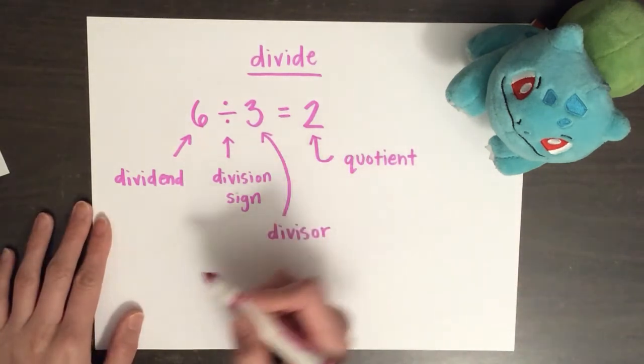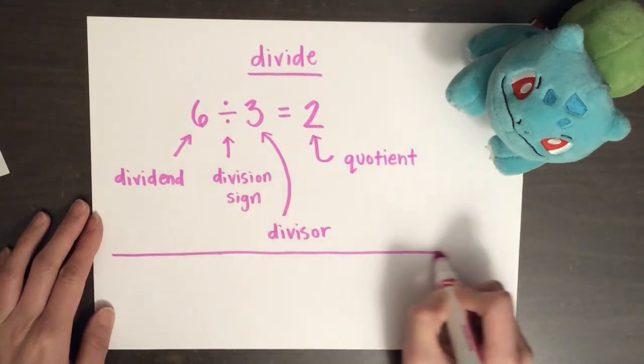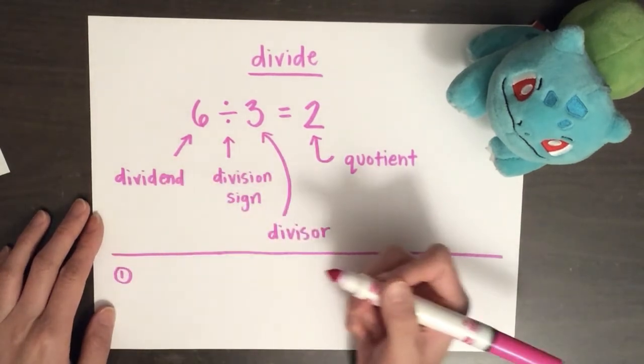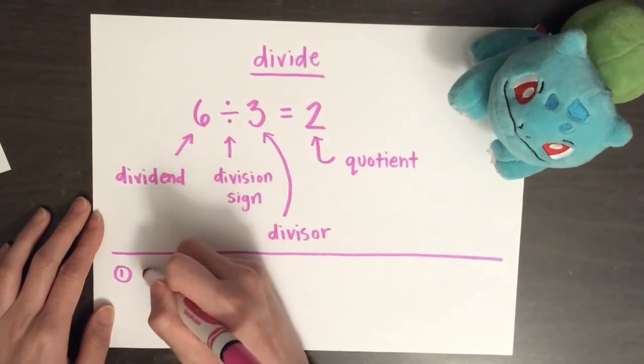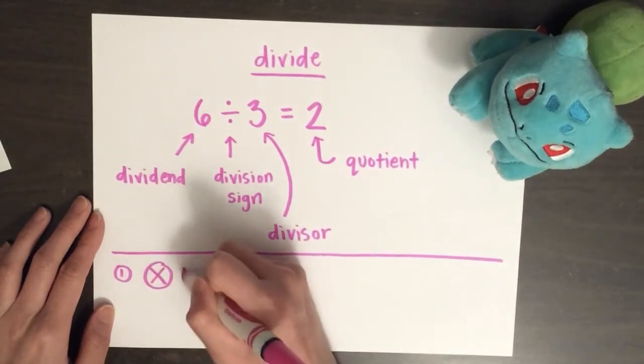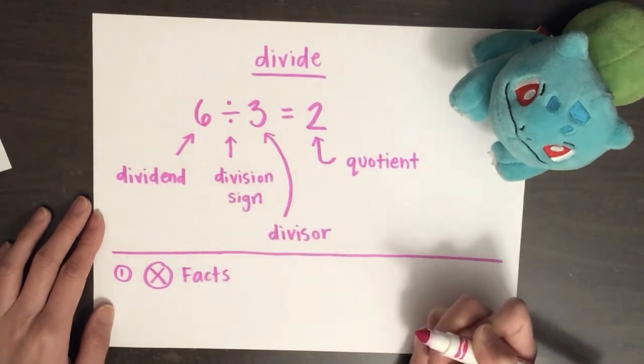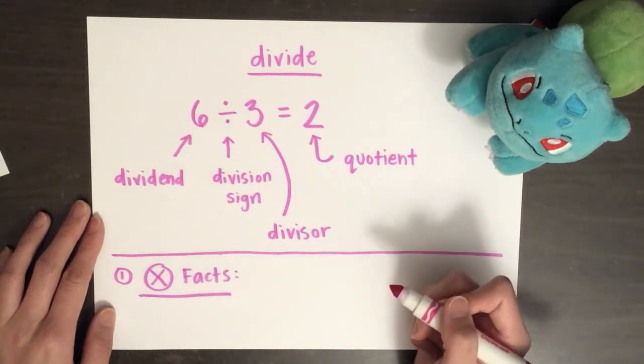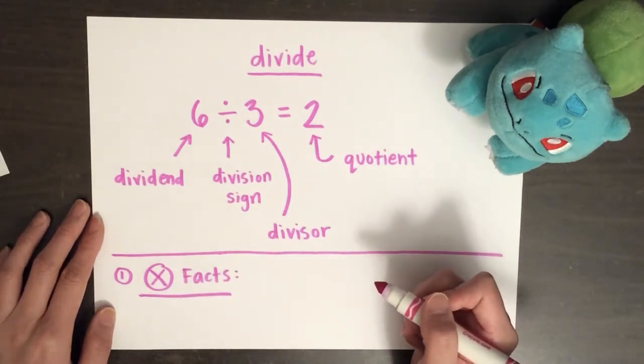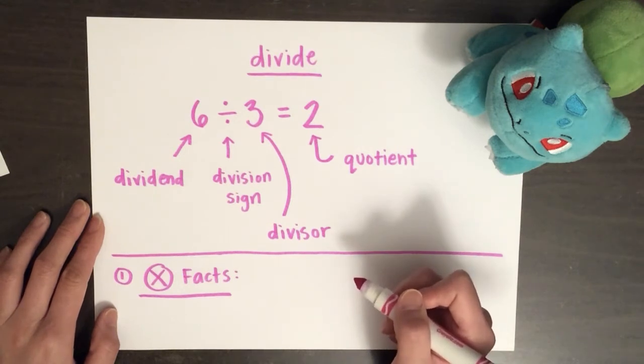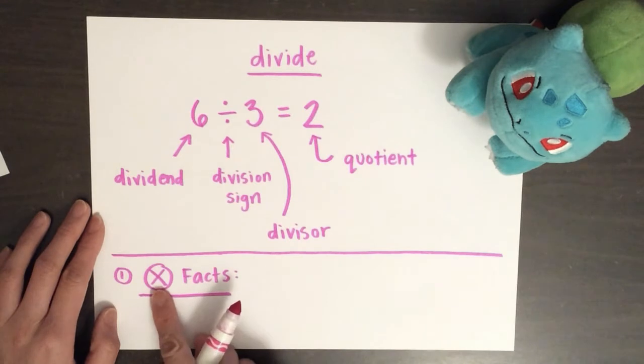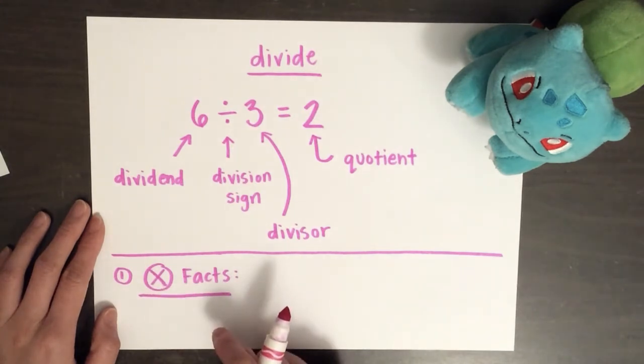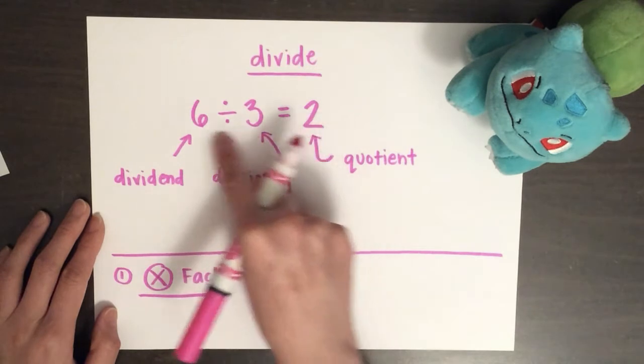First, we can use multiplication facts. Multiplication is the inverse operation of division, meaning that they undo each other or they're opposites. So when you read a division question, you can actually ask yourself a multiplication question. For example, let's use this equation above.